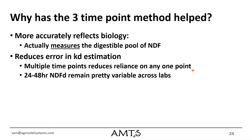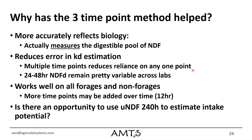The three-time-point method more accurately reflects biology because we're actually measuring the digestible pool rather than relying on a lignin times 2.4 factor. It reduces error in estimating KD since we have two additional time points and can run a least-squares regression. It also eliminates the debate of 24 versus 30 versus 48-hour NDFD. The method works well on forages and non-forages alike, and has given us the ability to use the unavailable fiber portion — uNDF — to estimate intake potential.